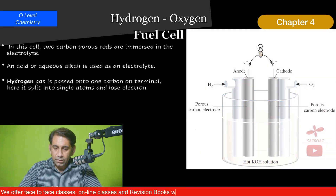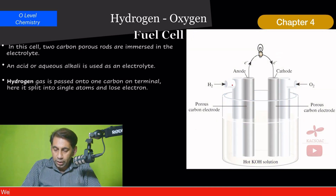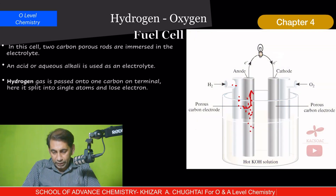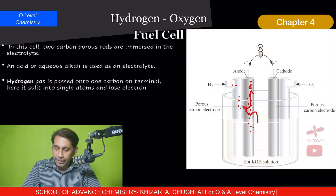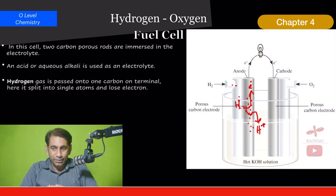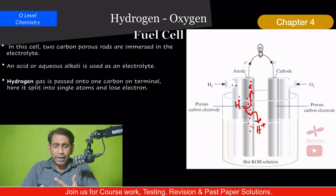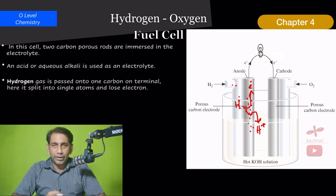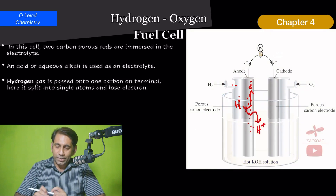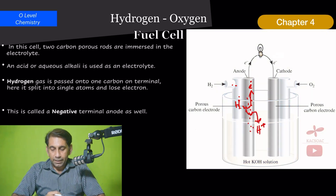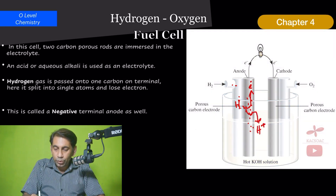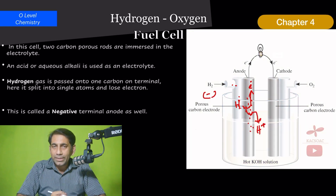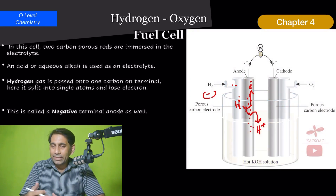Hydrogen gas is passed through one terminal, which acts as the anode. It passes through the electrolyte and splits into two parts — it loses electrons at the anode and converts into H⁺ (hydrogen ions). This means hydrogen is oxidized at this terminal, which is known as the negative terminal or anode.